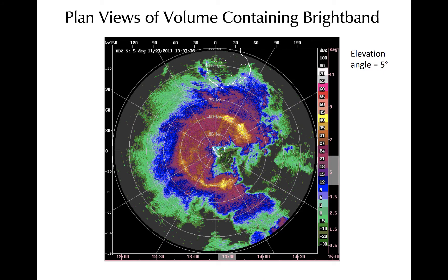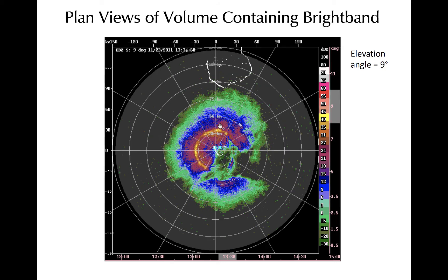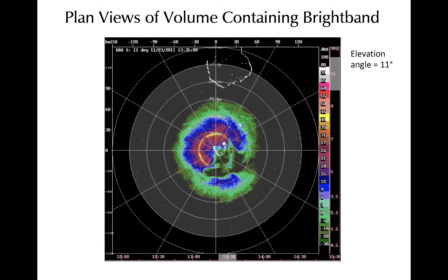In looking at plan views of reflectivity or other fields, the bright band can be seen as a ring of enhanced reflectivity, forming a ring at an approximately equidistant range, assuming the horizontal gradient temperature in the radar domain is small. This example shows a radar bright band for a five-degree tilt, located about 50 kilometers from the radar site. As we move to a higher elevation angle, we see that ring get closer to the radar, because the height of the beam increases more rapidly with range. And with even higher tilts, the bright band appears even closer.